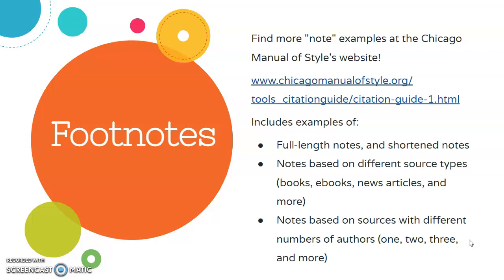The examples shown thus far have been based on journal articles. But if you'd like to find more examples, the official website from the Chicago Manual of Style has many to browse through. The site has many examples of full-length notes as well as short notes, and sample notes based on other source types — things like books, ebooks, news articles, and more. The site also has sample notes based on sources with different numbers of authors, so if you'd like to see sample notes for an article with two authors or even a dozen authors, the Chicago Manual of Style website linked here has many examples.